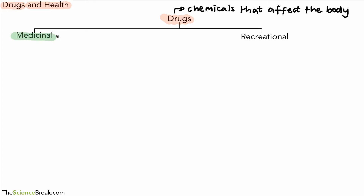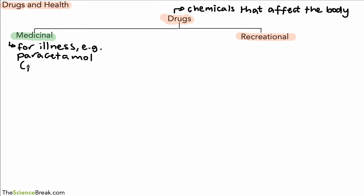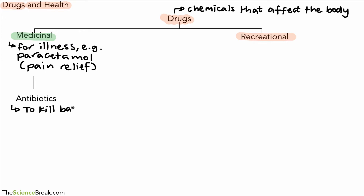Medicinal drugs are used to treat illness. One example is paracetamol, which is used for pain relief or fever. We also have antibiotics, which are chemicals used to kill bacteria that cause disease, such as chest infections and throat infections.